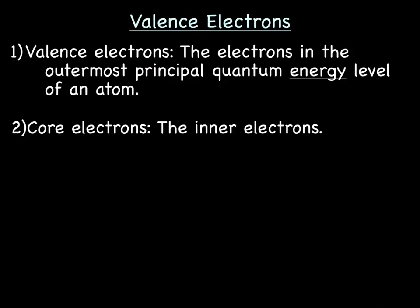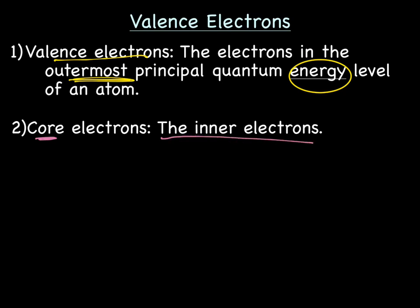Valence electrons are the electrons in the outermost principal quantum energy level — very important word here — the electrons in the outermost energy level. Core electrons are the inner electrons, meaning the ones that are not valence. Anything that's not valence electrons are core electrons.